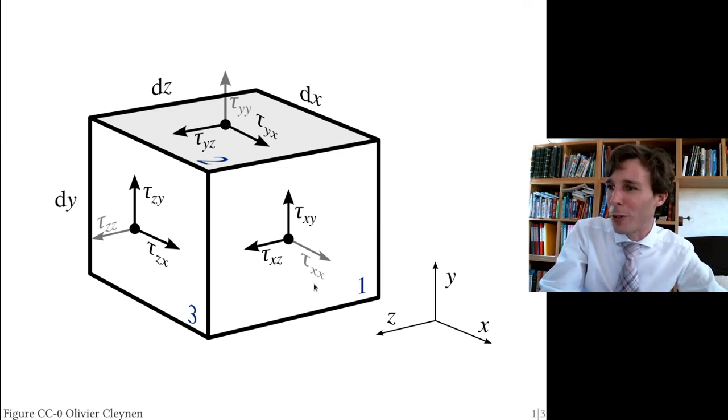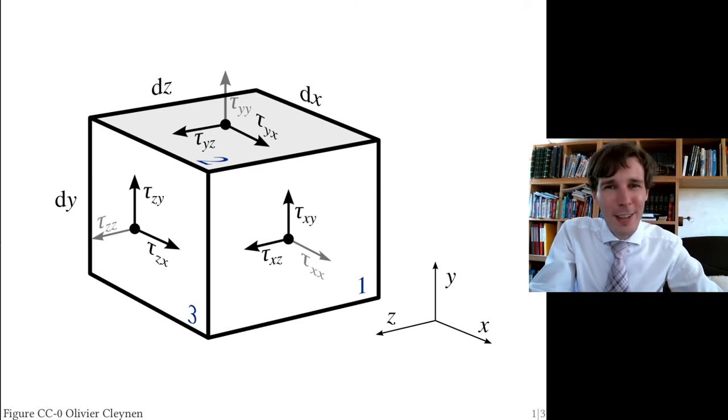Tau_xx, tau_yy, and tau_zz. So how can this be? How is it possible that there is shear perpendicular to a surface?